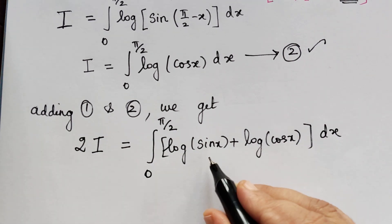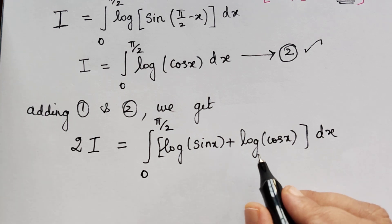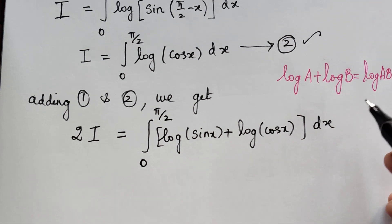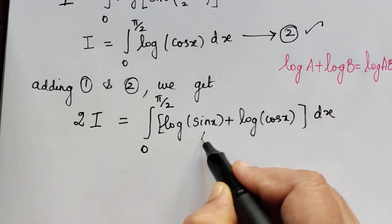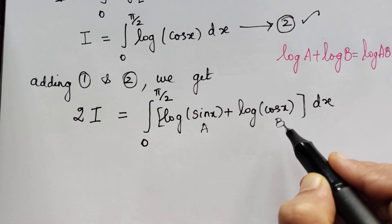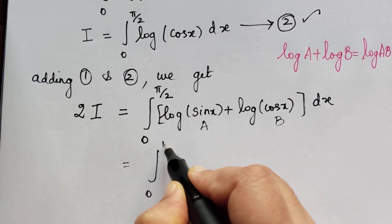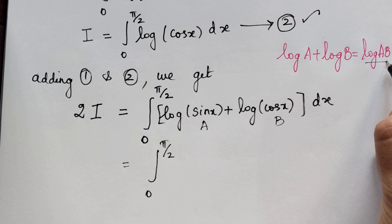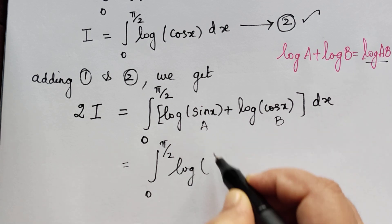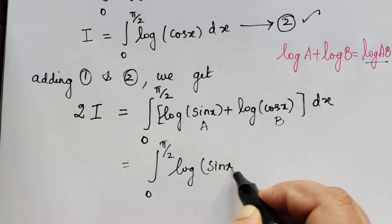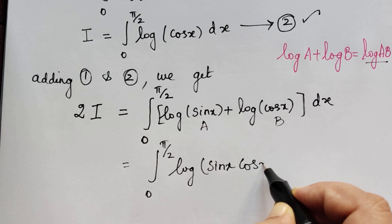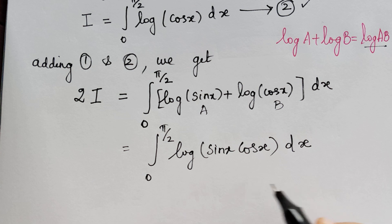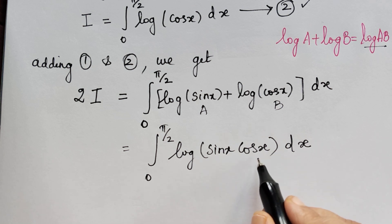We know that log a + log b = log(ab). So by using this property of logarithms, we can rewrite the right side: 2I = ∫₀^(π/2) log(sin x · cos x) dx.